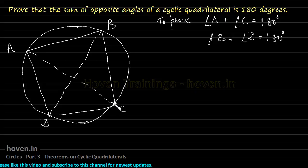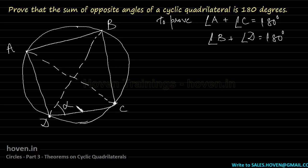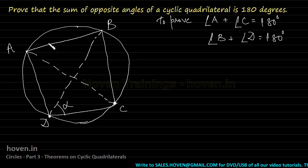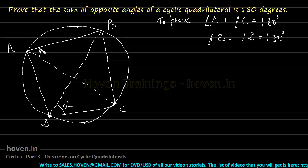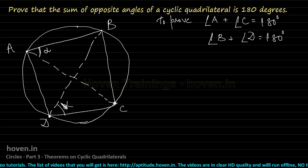BC is a chord. It subtends angle BDC at point D on the circle — call this angle alpha. The same chord BC also subtends an angle at point A on the circle, which must also equal alpha, since angles in the same segment are equal.